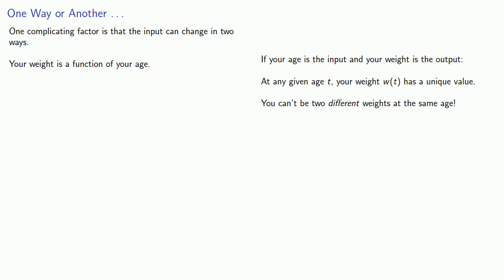The age t here is some real number, so we're talking about an exact instant in time at which you can't have two different weights. Your change in weight can be described in two ways.